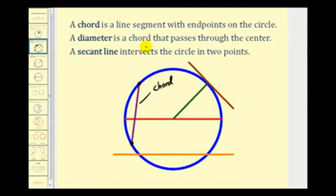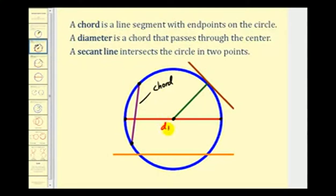A diameter is a chord that passes through the center. This is the center of the circle, and since this red segment has its endpoints on the circle and passes through the center, this red segment is the diameter. You can probably notice that the diameter is twice the length of the radius.